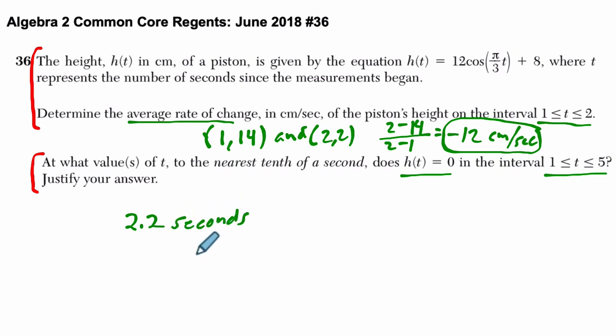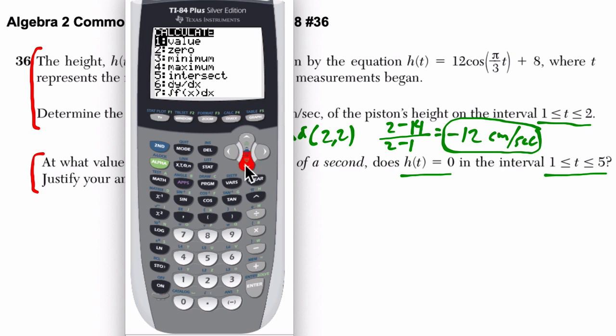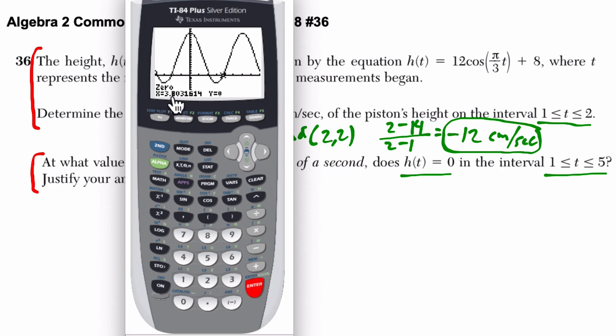Where's the other point? If I hit second, trace again, and I go to 0, then I go over again. I know the next 0 is going to be somewhere here. So I pick a point to the left of it, enter. I go to the right of it, enter, enter. And I get my second 0, about 3.8.